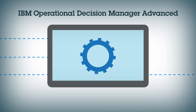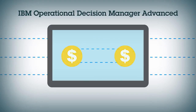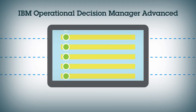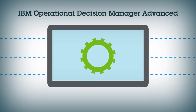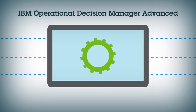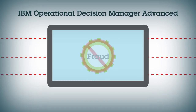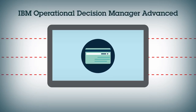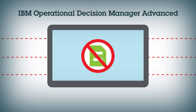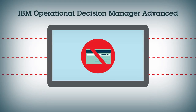IBM Operational Decision Manager Advanced dynamically monitors transactions in real time, gathering data in motion at the time of interaction and using that data to build and maintain relevant context. It leverages that context and even allows the application of predictive analytics to make the best operational decision. The bank is then able to detect fraudulent activities, taking split-second systematic action to initiate additional card validation, flagging George's account and disabling the card.